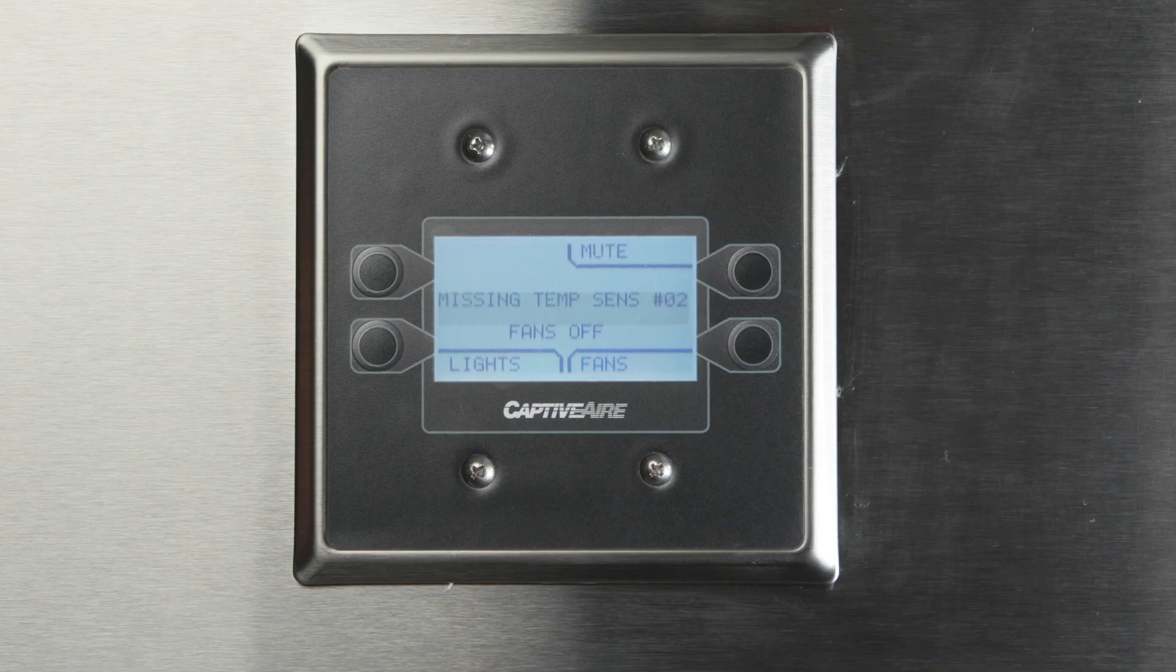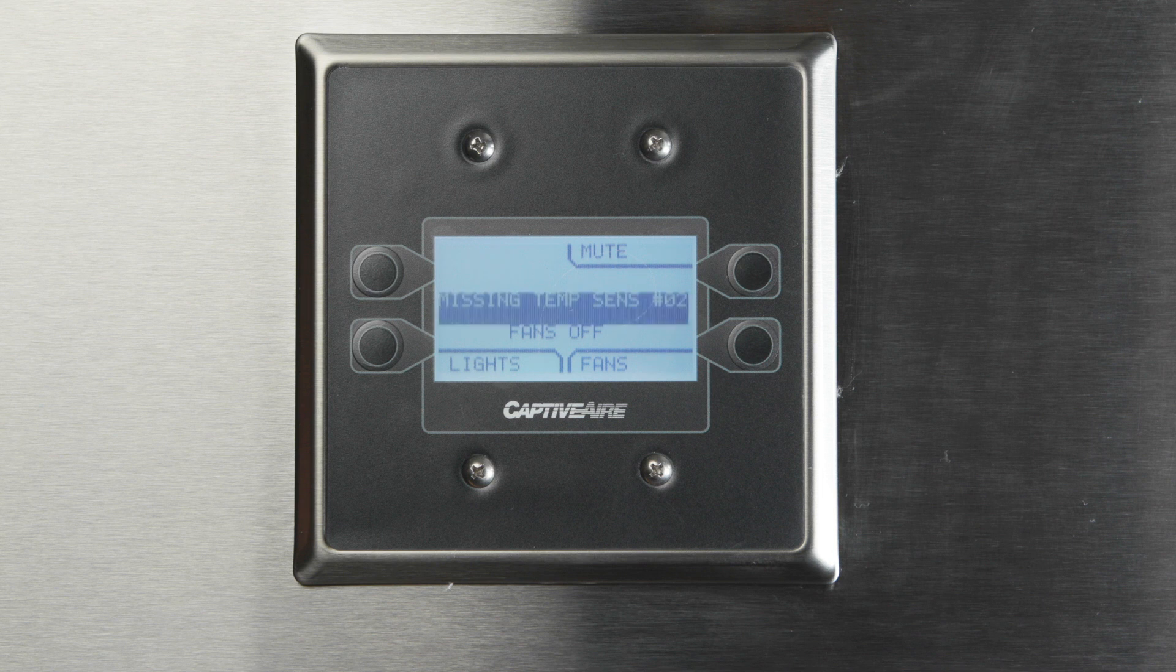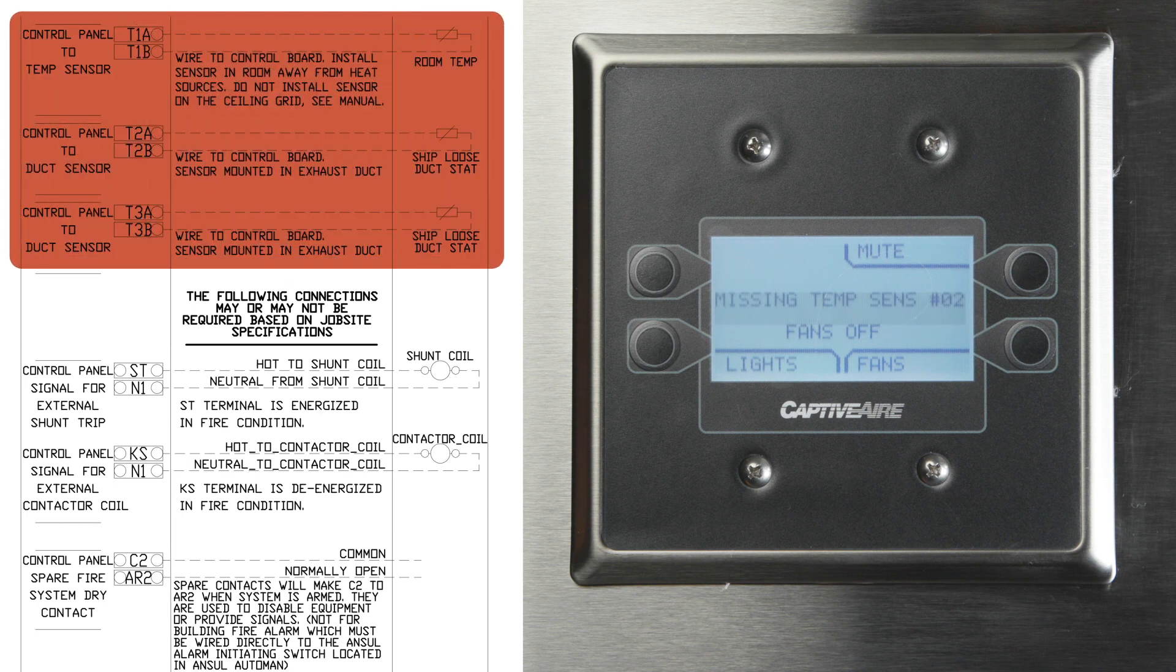The last most common issue is the HMI showing missing temp sensors. This simply means that the circuit board has been programmed for a specific number of temp sensors and is not detecting all of them. Verify all your sensors got wired to the T terminals. Again, the wiring diagram will show you the number of sensors required for your specific job.